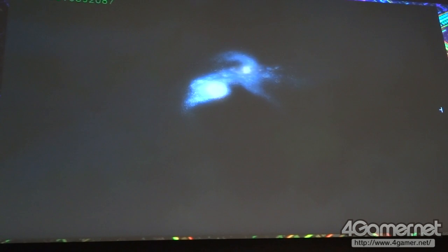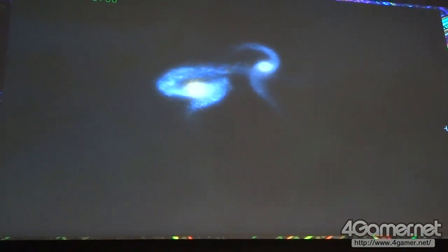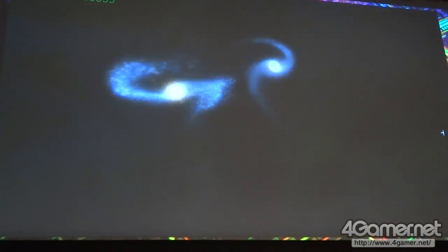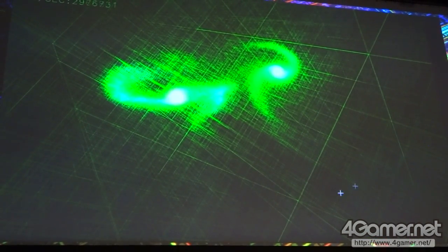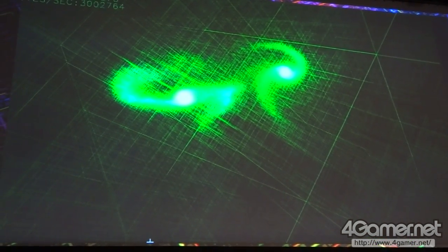we use what's called an oct-tree code, where we approximate distant stars as a set. A group of distant stars, we can approximate them as a single larger star.